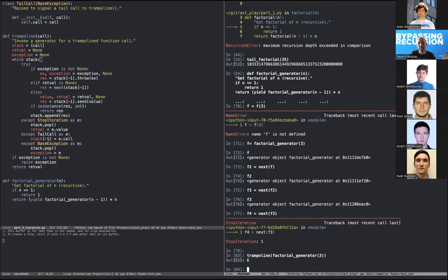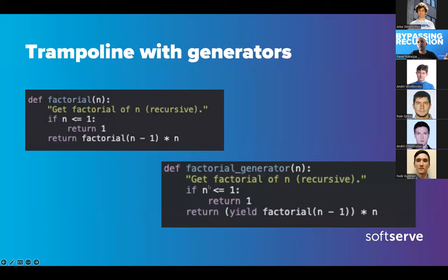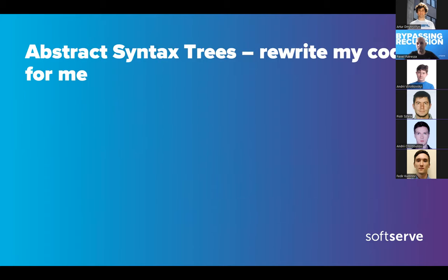But there's one thing left - we still have to change our code. We need to find all the recursive calls and paste a `yield` around them, because now the function has to be a generator. I don't want to do that manually. Maybe we can try some more Python magic and do it for us - enter abstract syntax trees.